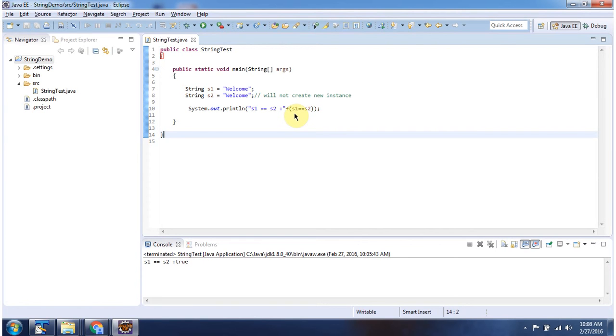Like we discussed, S1 and S2 will point to the same string instance. So if you do S1 equals S2, it will give true. And this is about string constant pool. Thanks for watching.